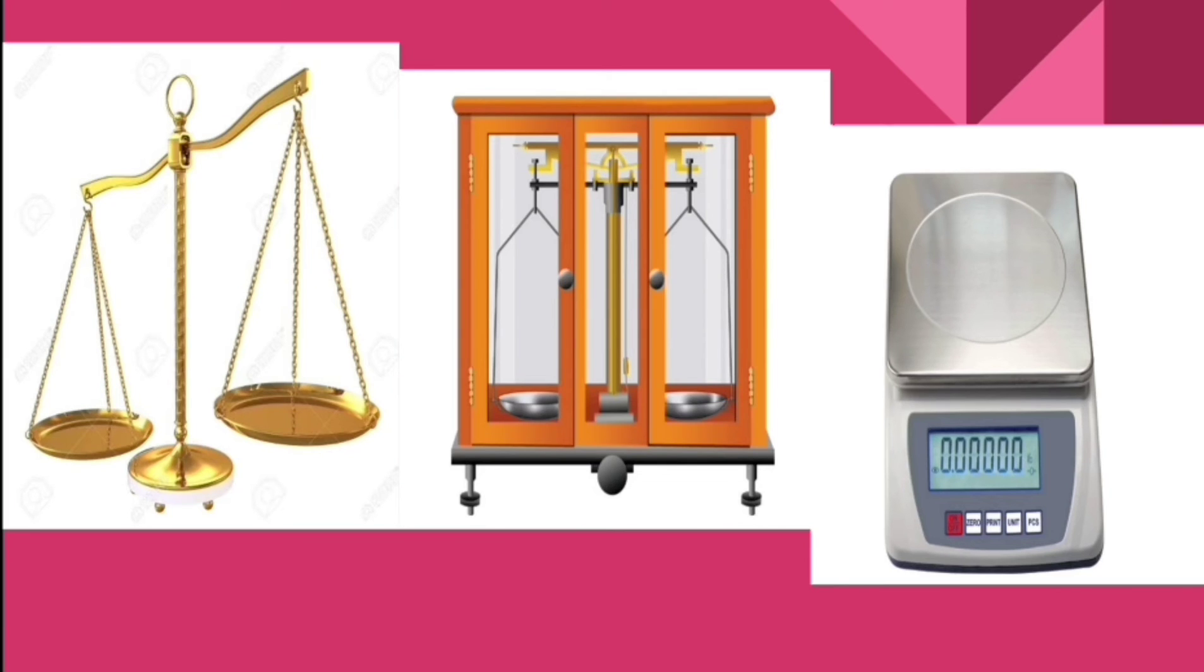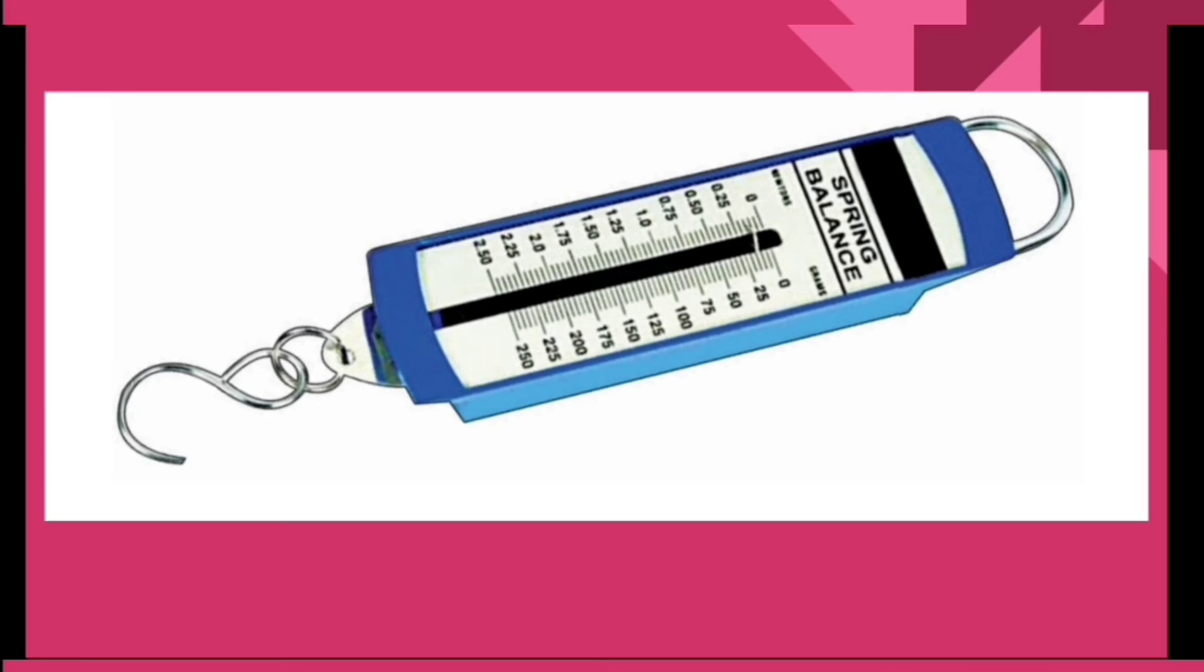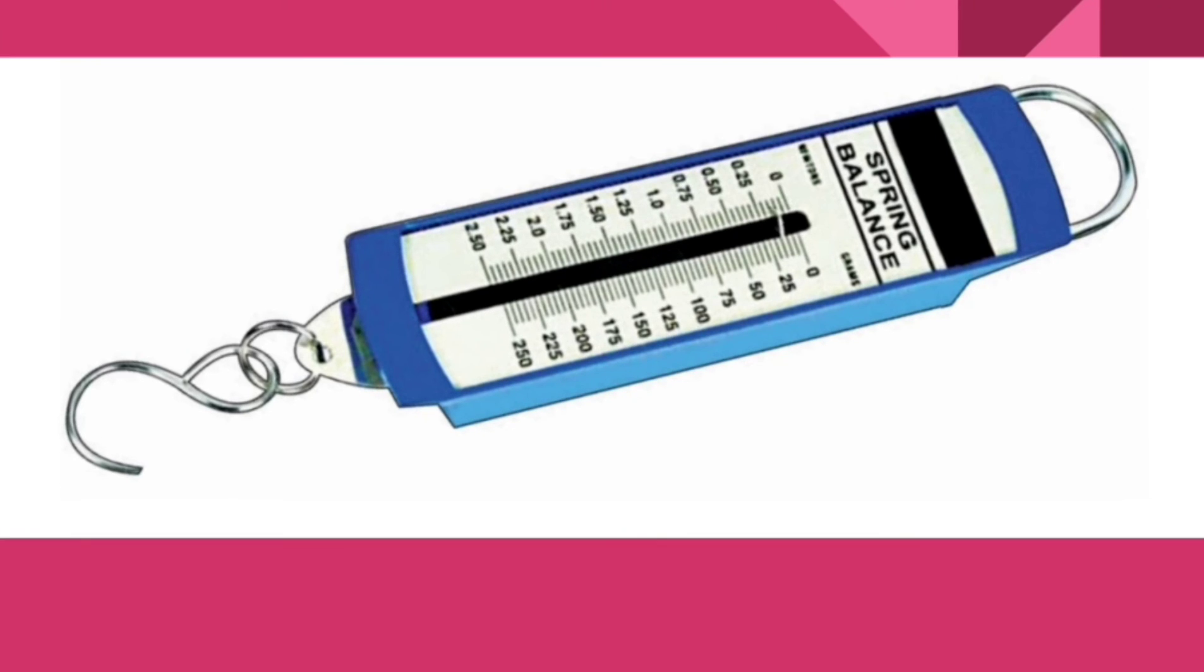The special category is spring balance. This balance helps us to find the weight of an object. Before, the three categories were to measure the mass, but this one measures the weight of the object. Weight and mass, both are different factors. What is mass and what is weight? Afterwards, we will see.